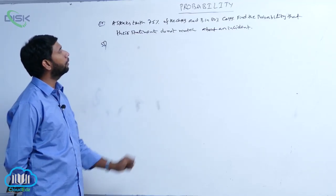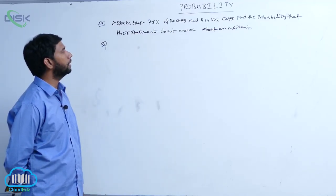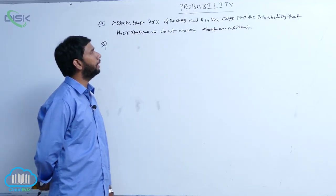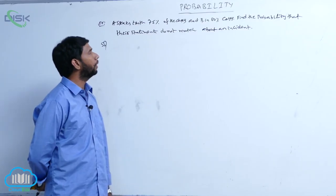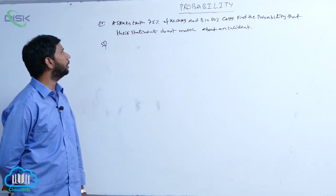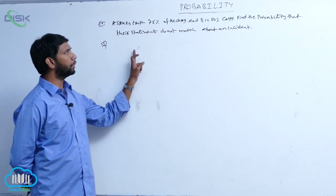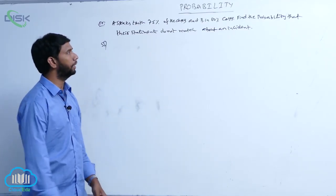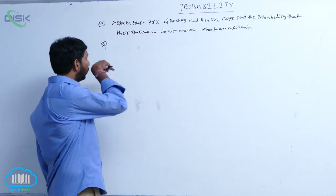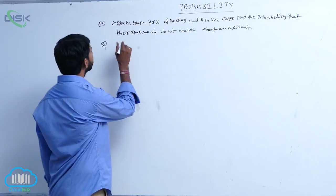A speaks truth in 75% of the cases and B in 80% of the cases. Find the probability that their statements do not match about the incident.